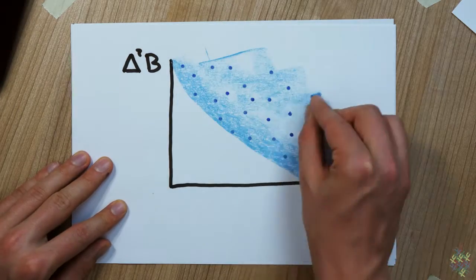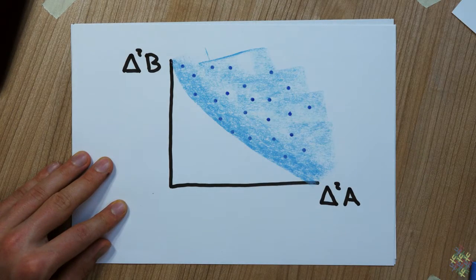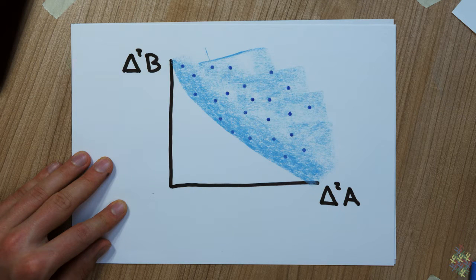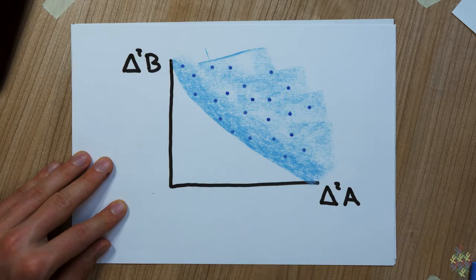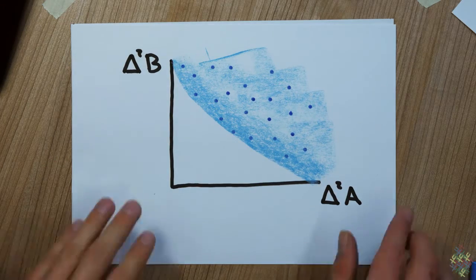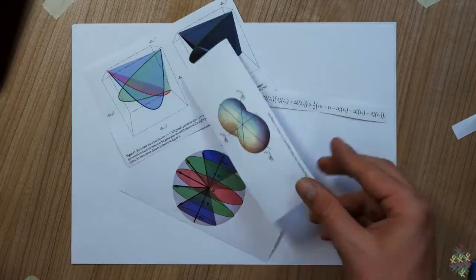Now, the uncertainty principle demands that you cannot get both variances small, that is, in this diagram has some white space around the origin. Robertson's relation will allow no such conclusion, but our paper gives many results about this.